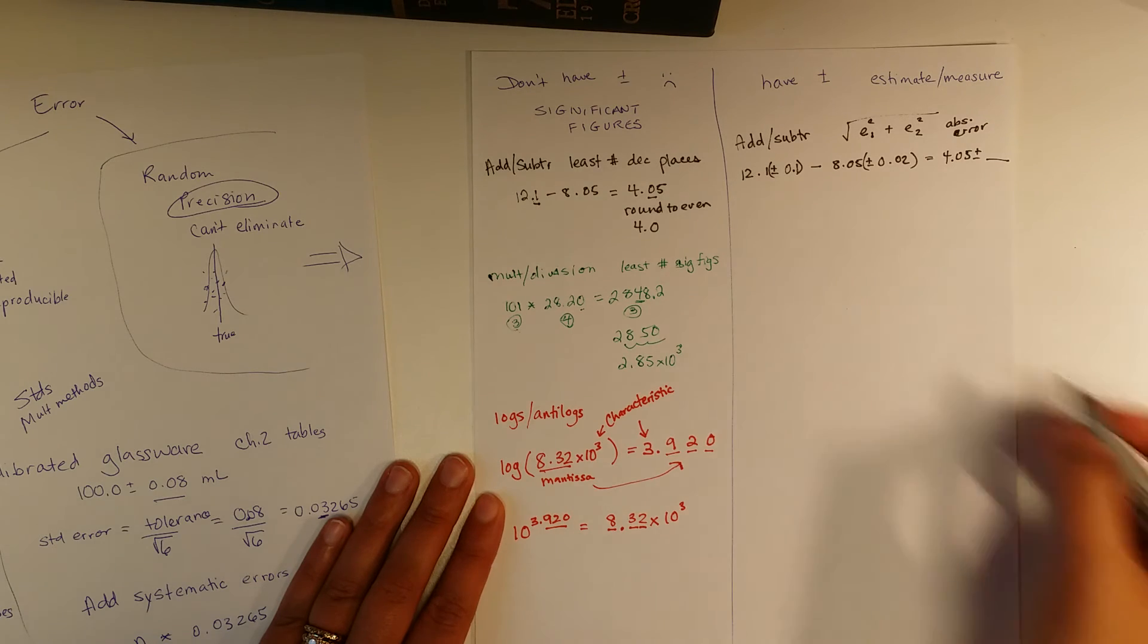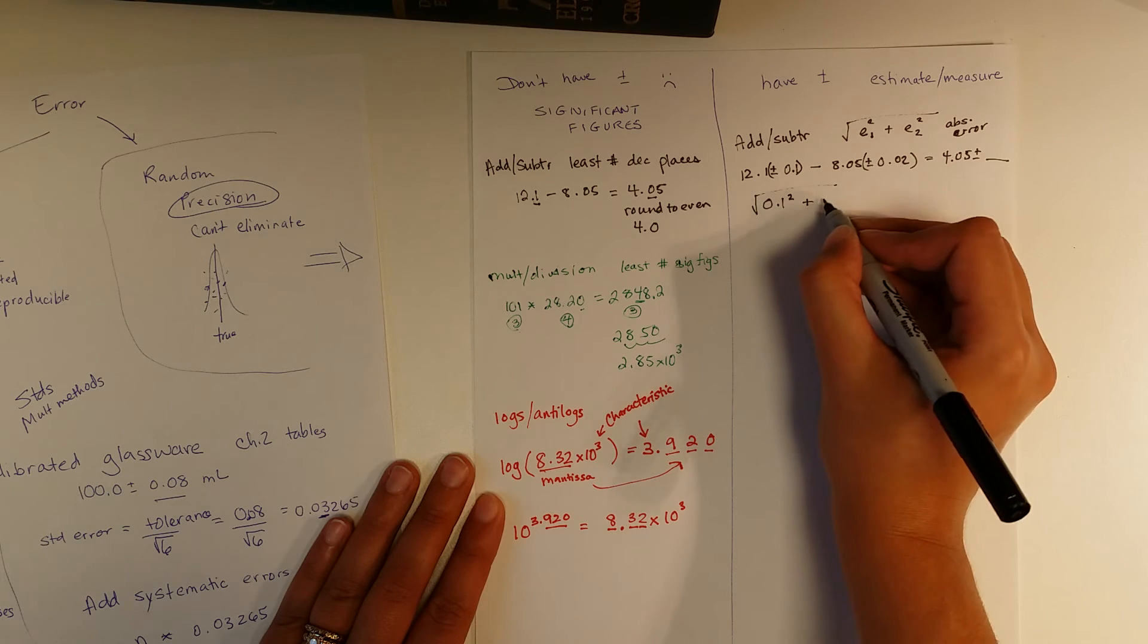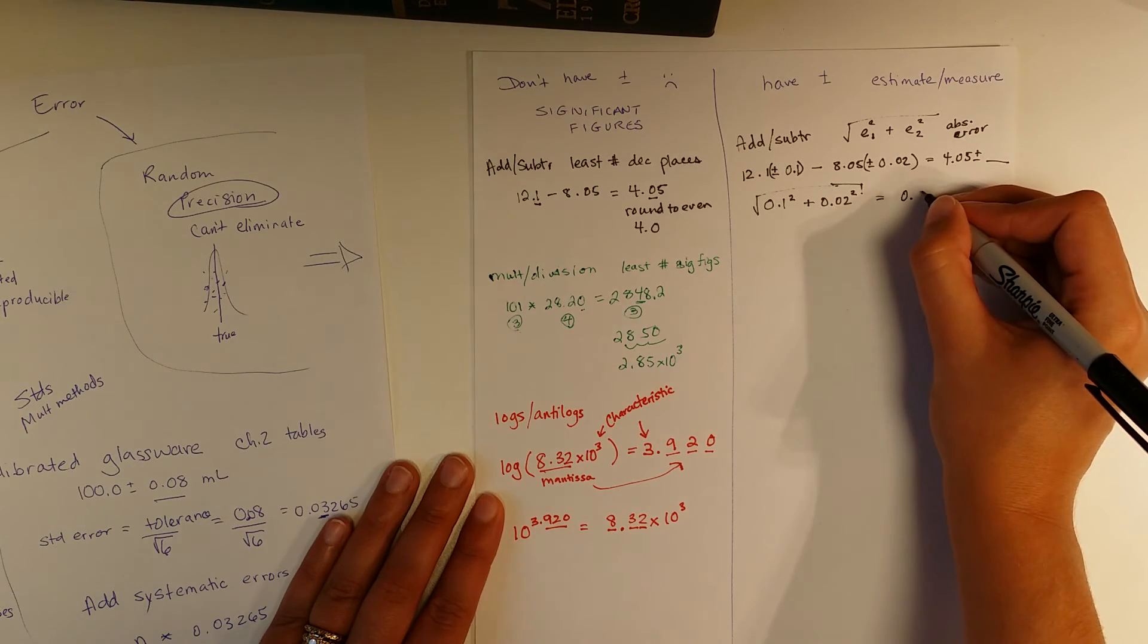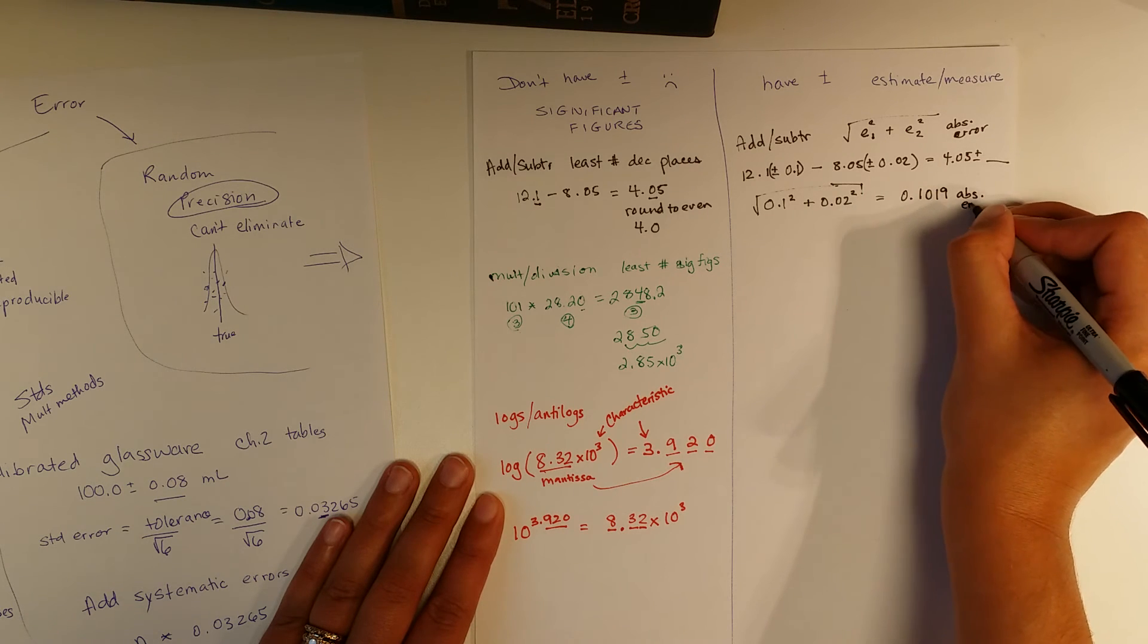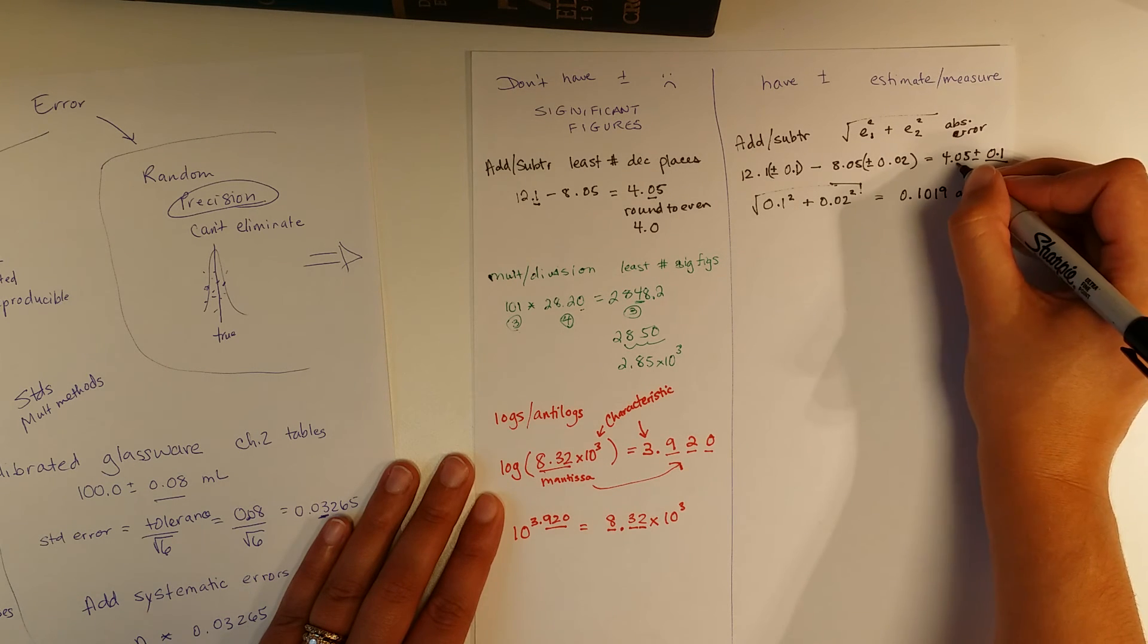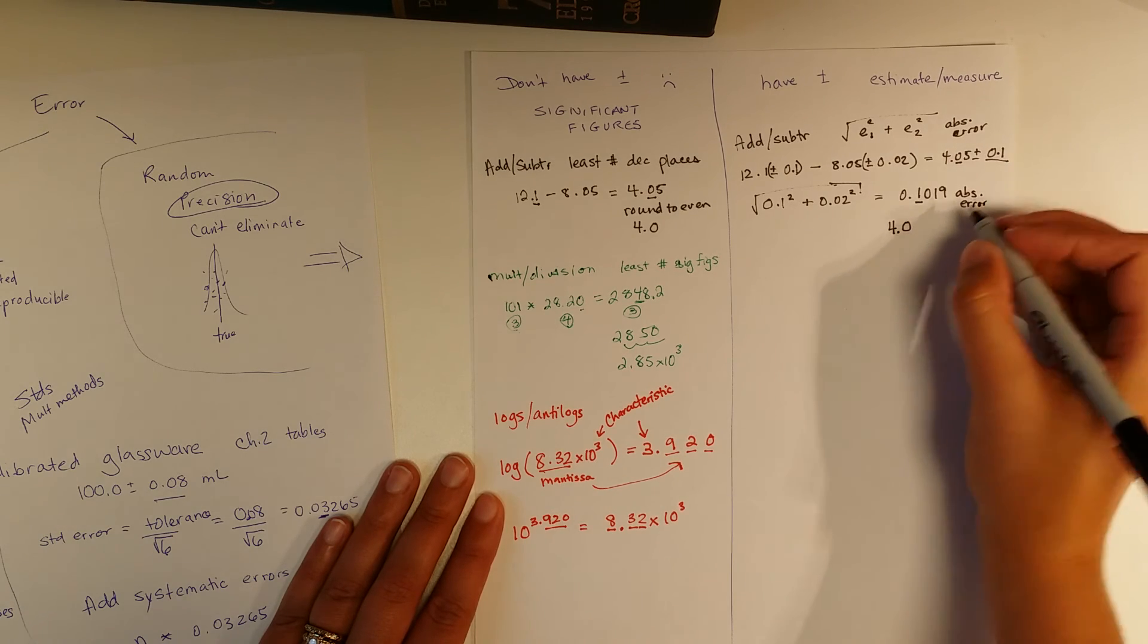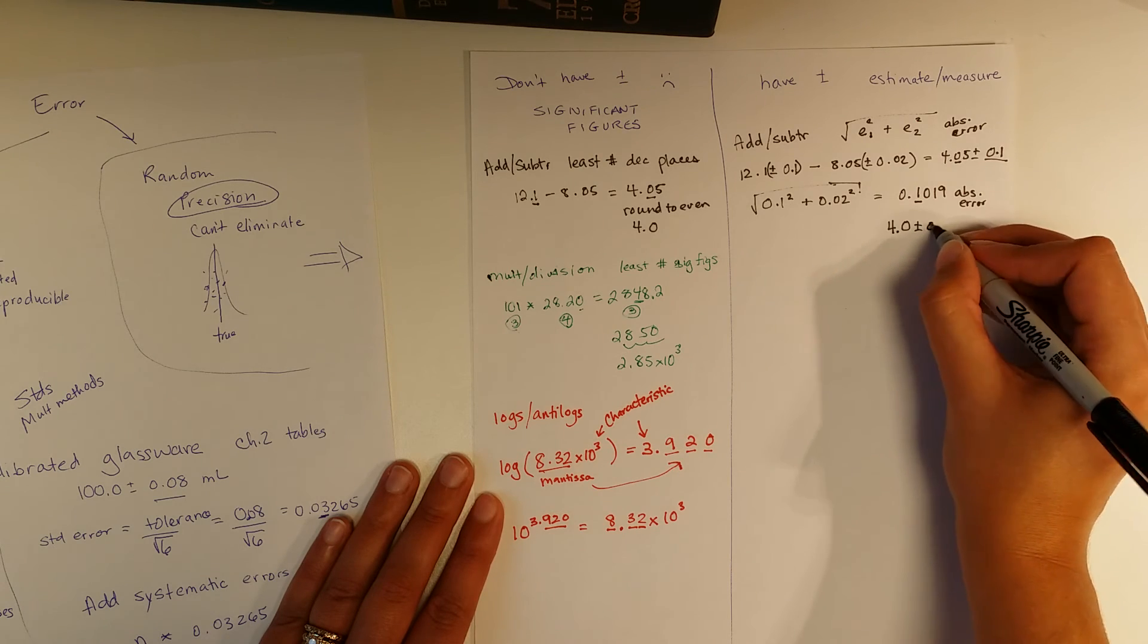But then the question is plus or minus what? And what you'll do is the 0.1 squared plus the 0.02 squared inside a square root. And that pops out to be 0.1019. And again, because we put absolute error in, this is the absolute error out. So this is plus or minus 0.1. This is one decimal place. That's one decimal place. And real rule of sig figs say the first digit of the uncertainty is the last digit of your number. We still use the rounding rules. So we round to the 4.0, and it's plus or minus 0.1.